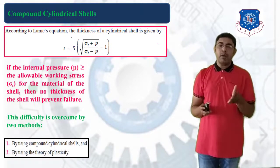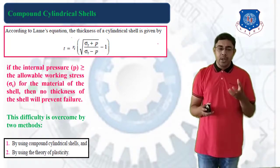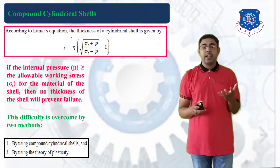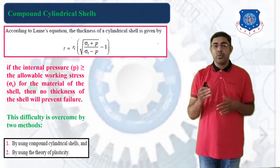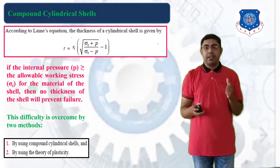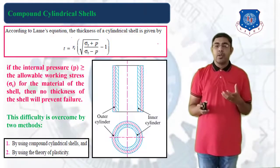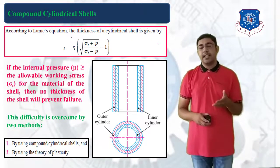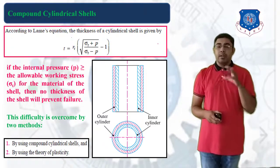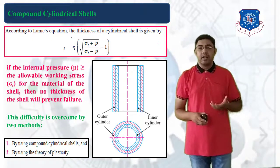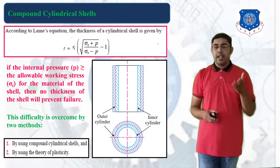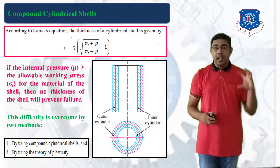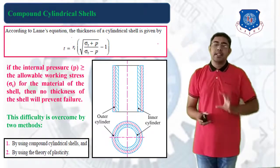To overcome this difficulty, there are two methods: first is by compounding — compound cylindrical cells — and second is by using the theory of plasticity. These two methods allow us to overcome the difficulty when the condition P ≥ σT arises. Consider the first method: compound cylindrical cells. As shown in the figure, there are outer cylinders and inner cylinders, and both cylinders are compounded by shrinkage fit.